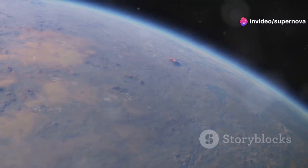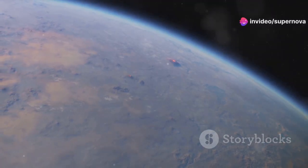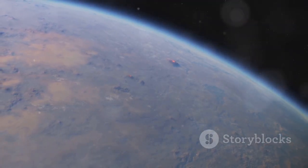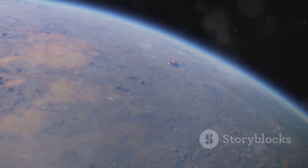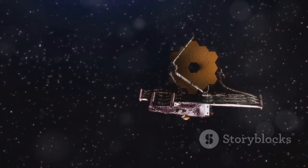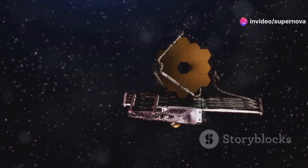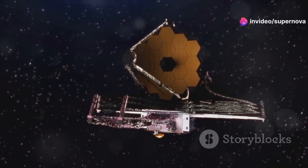One of the most exciting capabilities of the JWST is its ability to detect distant planets known as exoplanets. Its infrared vision has allowed it to observe the faint glow of city lights on Proxima b, a planet orbiting the star Proxima Centauri.